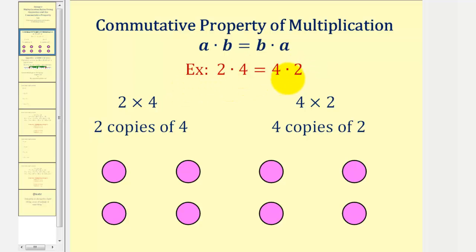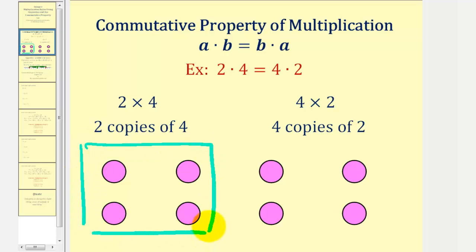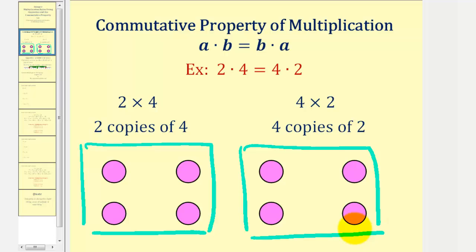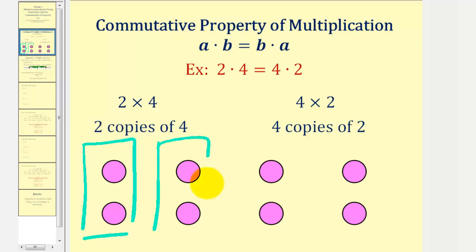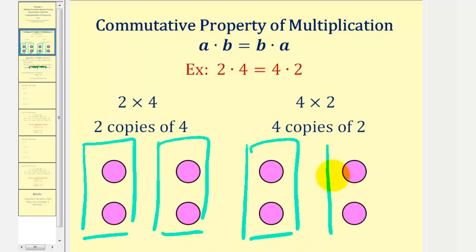There is one slight difference between two times four and four times two. If we wanted to model two times four, this means we have two copies of four, or two sets of four — here would be one copy of four, and here would be another copy of four, giving a result of eight. But four times two means we actually have four copies of two: one copy of two, two copies, three copies, and four copies of two. In both cases the product is eight, but if we want to model them, there is a slight difference.